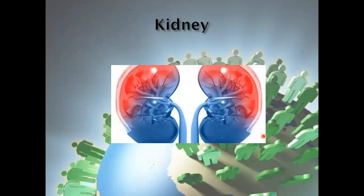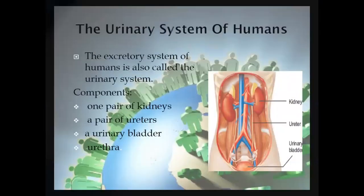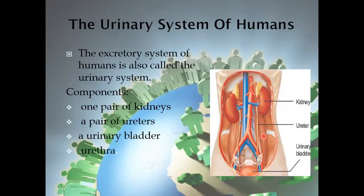The next organ is the kidney. This picture shows the kidney. We will discuss the urinary system of humans. The urinary system of humans is composed of a pair of kidneys, a pair of ureters, a urinary bladder, and the urethra. The ureters open into the urinary bladder and then into the urethra. These are the four major components involved in the urinary system, also called the excretory system of humans.